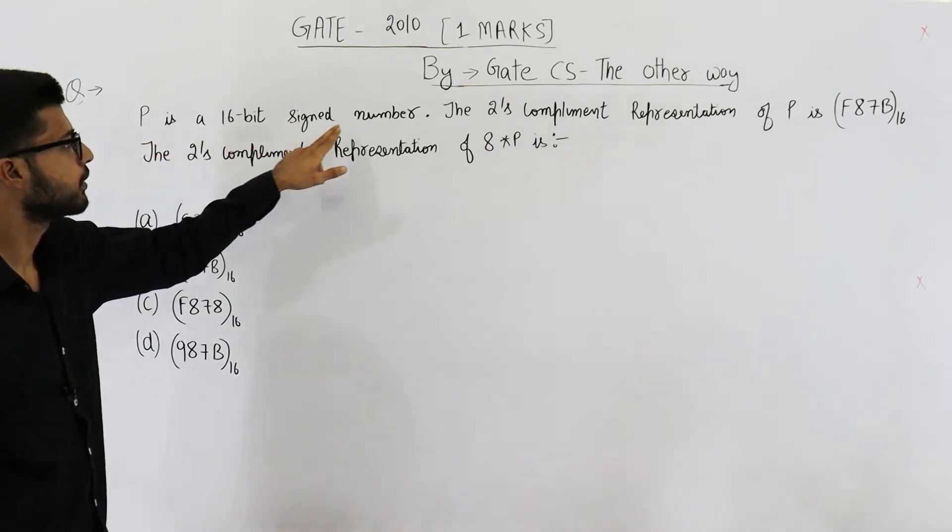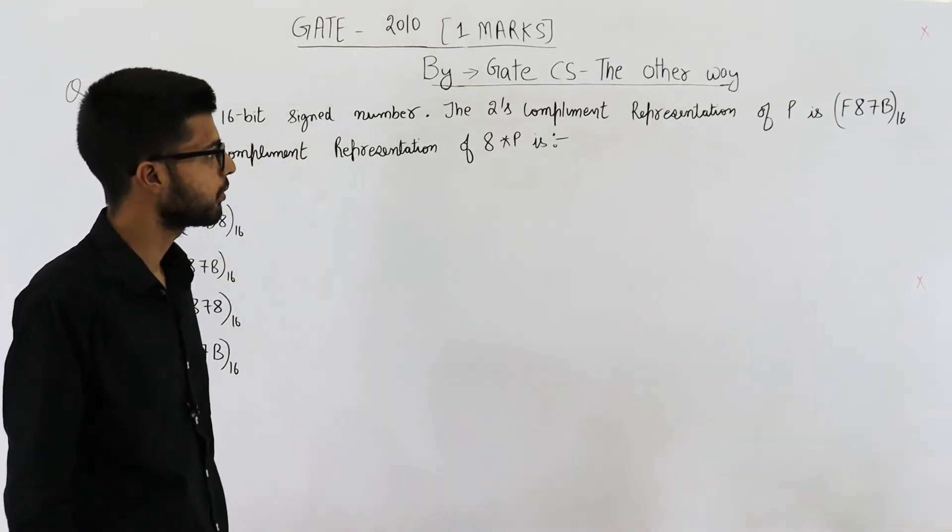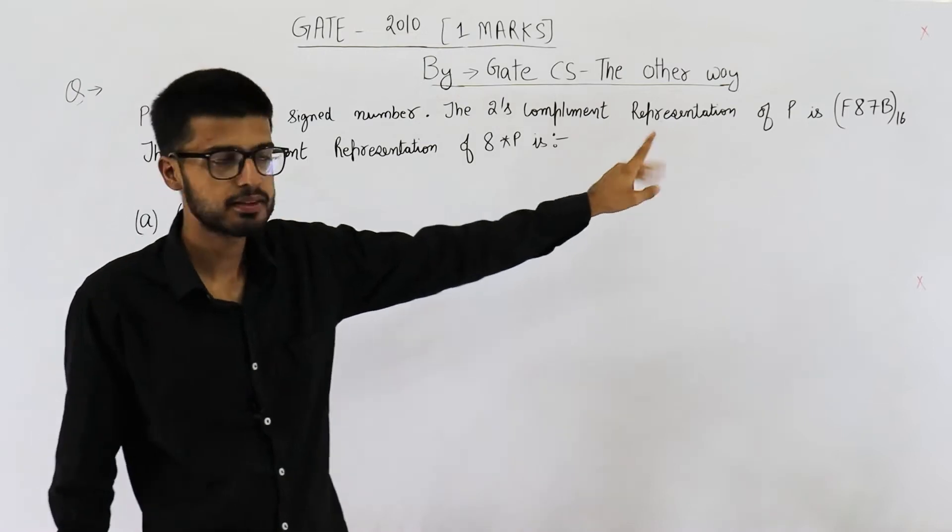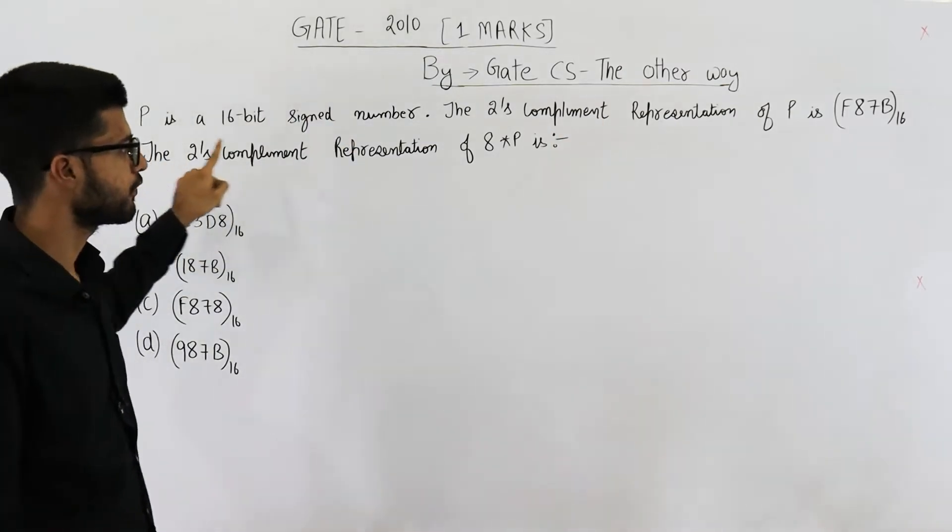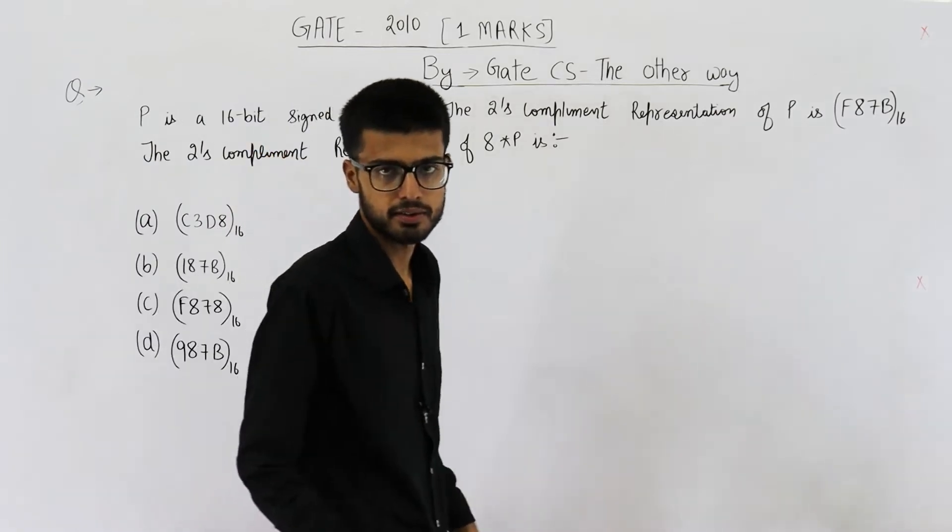It says P is a 16-bit signed number. 2's complement representation of P is given. The 2's complement representation of 8 times P is.